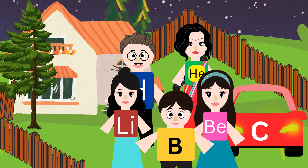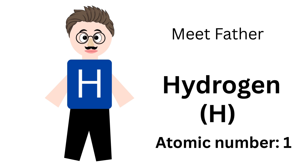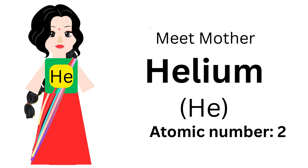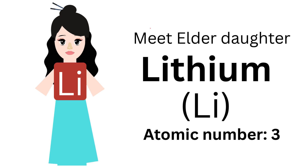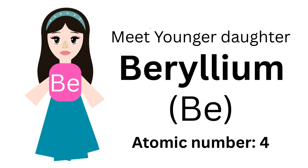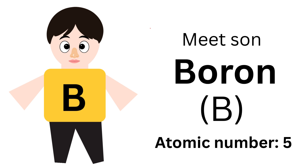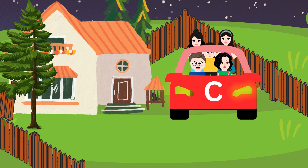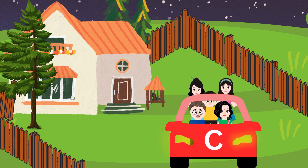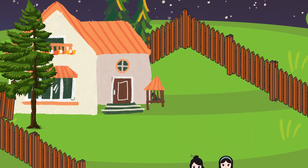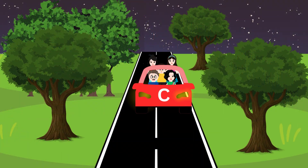There was a happy family of five members. Meet father Hydrogen, whose nickname is H. Meet mother Helium, whose nickname is He. Meet elder daughter Lithium, whose nickname is Li. Meet younger daughter Beryllium, whose nickname is Be. Meet son Boron, whose nickname is B. The whole family — Hydrogen, Helium, Lithium, Beryllium, and Boron — went in a car for a night movie show.